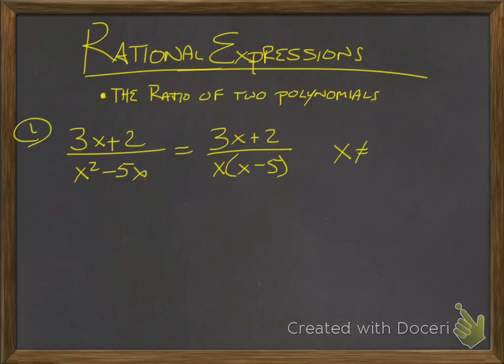In this case, x cannot equal zero or five, because if x is zero, that would make this zero and multiply the denominator to be zero. If x is five, it would make this parentheses zero, and the denominator would be zero as well.